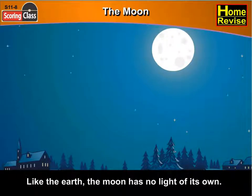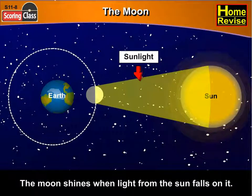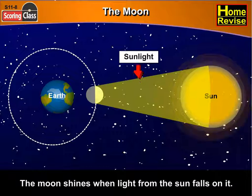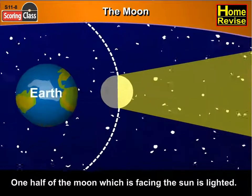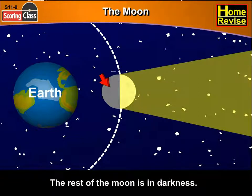Well, the Moon shines when light from the Sun falls on it. One half of the Moon which is facing the Sun is lighted. The rest of the Moon is in darkness.